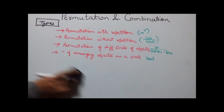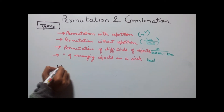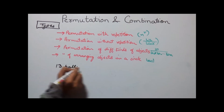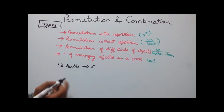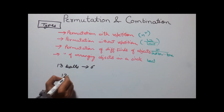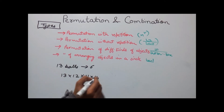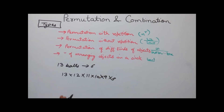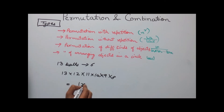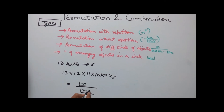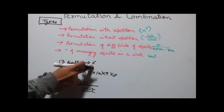Permutation without repetition: taking the same example, there are 13 balls and we are picking 6 balls. In this case we are not putting the ball back. So we get 13 balls in the first pick, then 12, then 11, 10, 9 and 8. This can be written as factorial n divided by factorial (n minus r), where n is the total number of balls and r is the number of balls to be picked up.